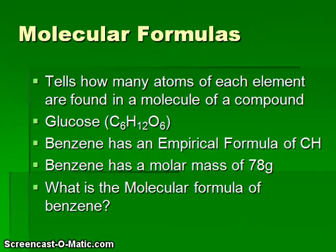The final concept that we'll look at is how we can calculate molecular formulas from experimental data. So a molecular formula is going to tell us how many atoms of each element are found in a molecule of a compound. Again, we have an example of a molecular compound being something like glucose, C6H12O6. The molecule of glucose would actually contain 6 carbon atoms, 12 hydrogen atoms, and 6 oxygen atoms.